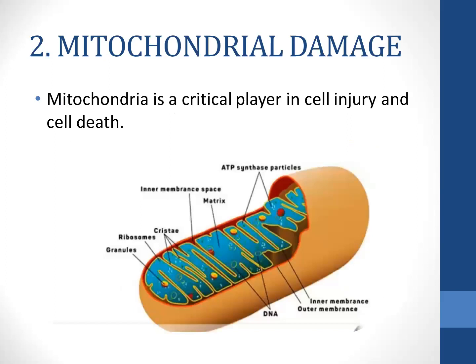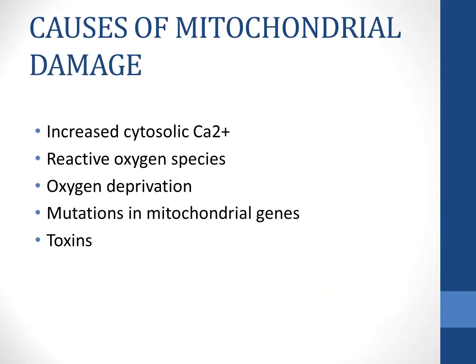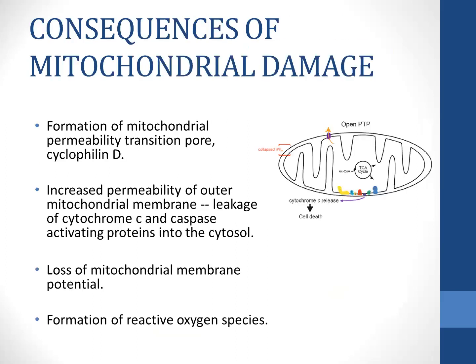Mitochondrial damage is another mechanism of cell injury. Mitochondria contains three important components: cytochrome C, caspase-activating proteins, and calcium. Causes of mitochondrial damage include increased cytosolic calcium ions, reactive oxygen species or free radicals, deprivation of oxygen (hypoxia), mutations in mitochondrial genes, and toxins. When mitochondria is damaged, a hole is formed within the mitochondrial wall called the mitochondrial permeability transition pore, and the contents of the mitochondria — cytochrome C, calcium, and caspase-activating proteins — leak out. Free radicals are formed and the mitochondrial membrane potential is lost.